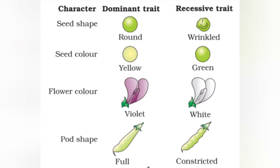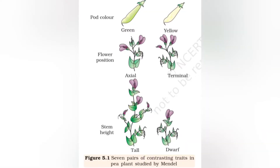The seven pairs of contrasting traits studied by Mendel were: seed shape (round or wrinkled), seed color (yellow or green), flower color (violet or white), pod shape (full or constricted), pod color (green or yellow), flower position (axial or terminal), and stem height (tall or dwarf).